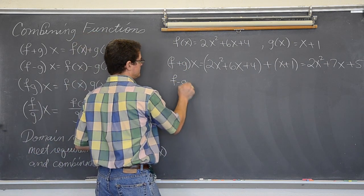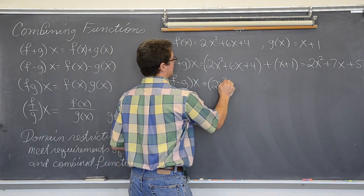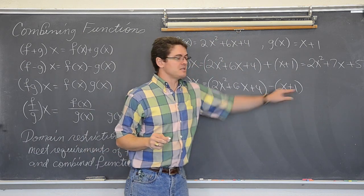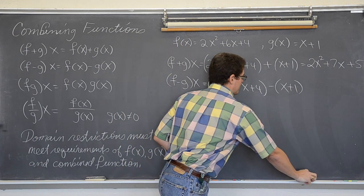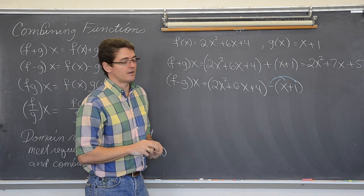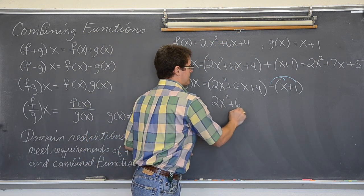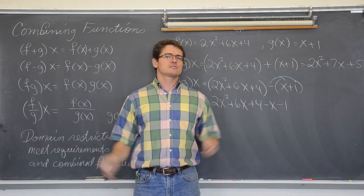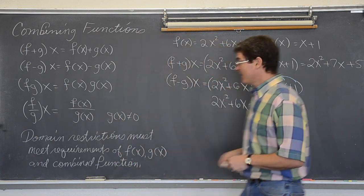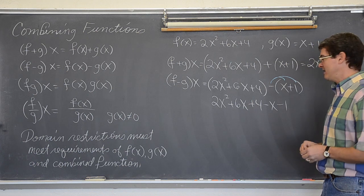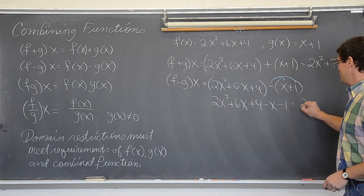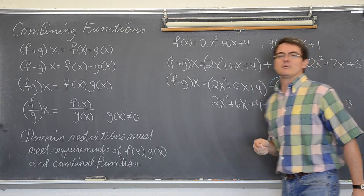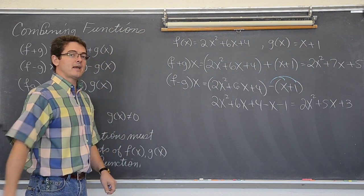Let's take a look at subtraction. f minus g of x — here the parentheses are going to do more work, because the negative in front of these parentheses will have to get distributed through. So don't forget to do that or you will have a sign error. We have 2x squared plus 6x plus 4, then negative 1 times x is negative x, and negative 1 times 1 is negative 1. So we get 2x squared, and like terms 6 and negative 1 give 5x, and then 4 minus 1 is 3. Again all polynomials, so all real numbers for the domain.